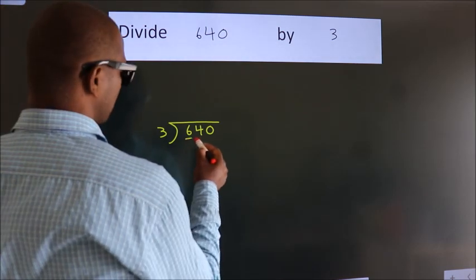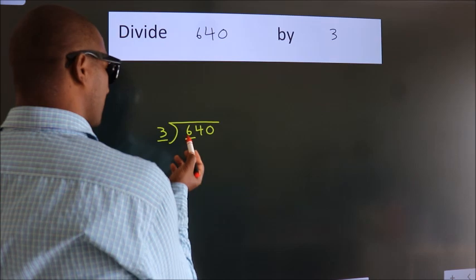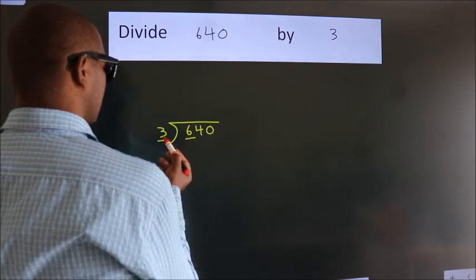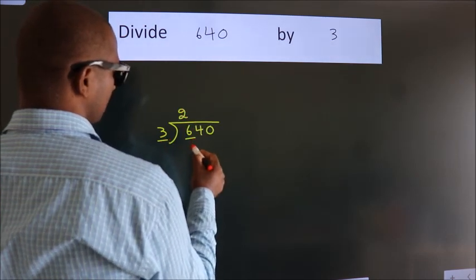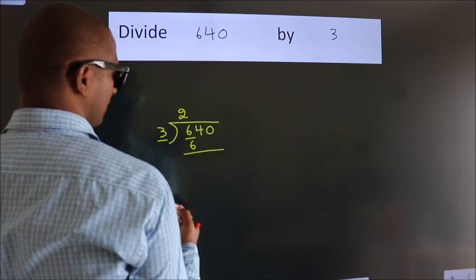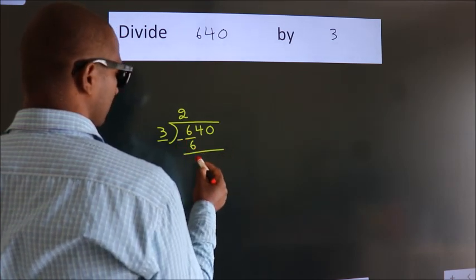here we have 6, here 3. When do we get 6? In 3 table, 3 2s, 6. Now, we should subtract, we get 0.